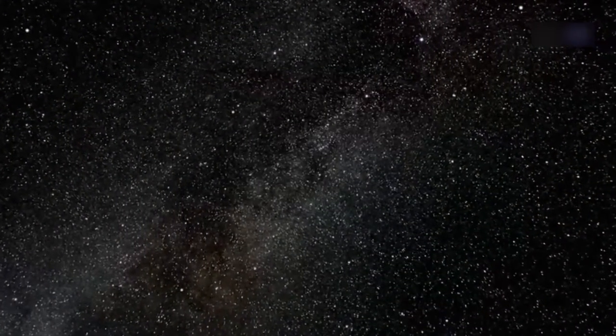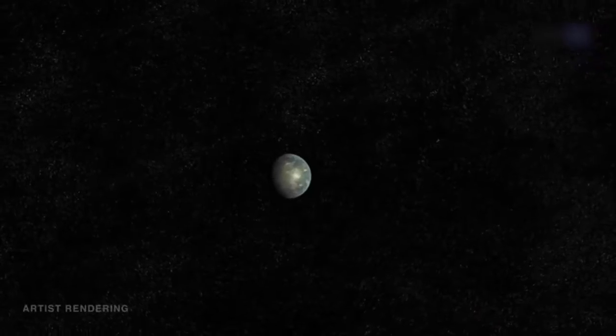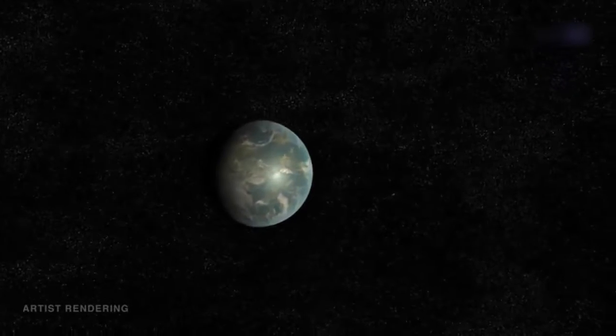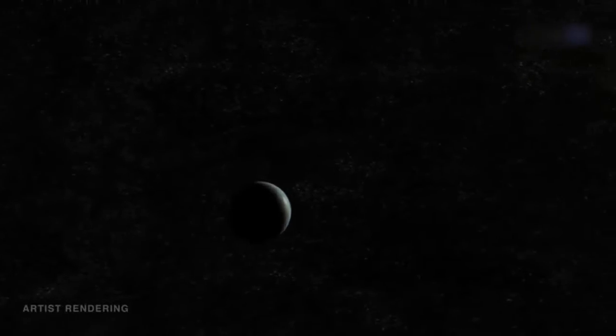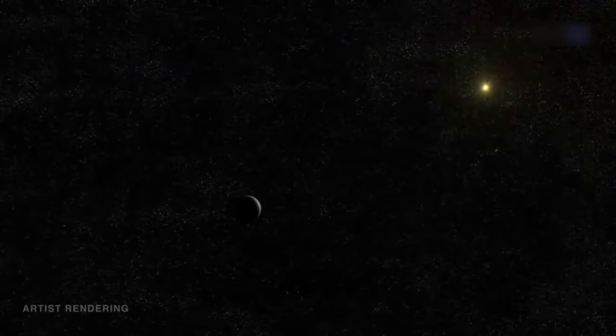Kepler has just found the closest analog to the Earth-Sun system. In July 2015, NASA announced the discovery of Kepler-452b, an exoplanet a little over 1.5 times wider than Earth, orbiting a G2-type star similar to our own Sun.